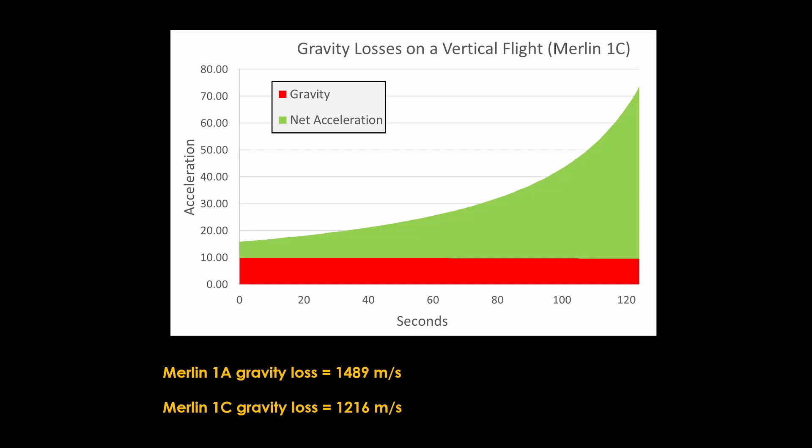Then some bozo comes along and says, you know, we can upscale the rocket to hold 23 percent more propellant and take advantage of the higher thrust to launch bigger payloads, and that extends the burn time back to where it was, and you end up losing about the same amount to gravity losses. The summary here is that gravity losses are just something you have to deal with.